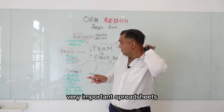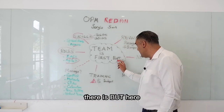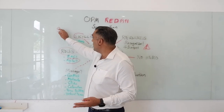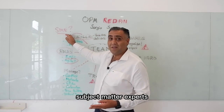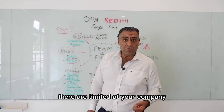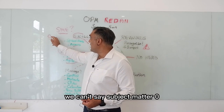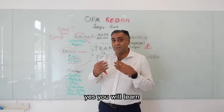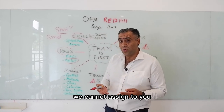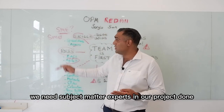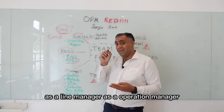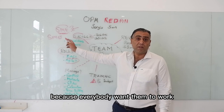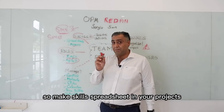Skill set is very important — use spreadsheets and assess your team members. But there is a caveat: an unskillful team is not okay. We need skilled people. We need SMEs — Subject Matter Experts. There are a limited number of such people in your company. Junior and less experienced people: yes, you will learn and make projects, but difficult tasks cannot be assigned to you. We need subject matter experts, and as a project manager or line manager, you should find them — though reaching them is difficult because everybody wants them. So make a skill spreadsheet for your projects.